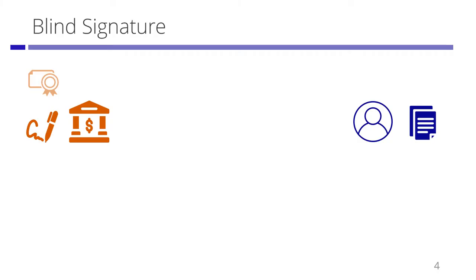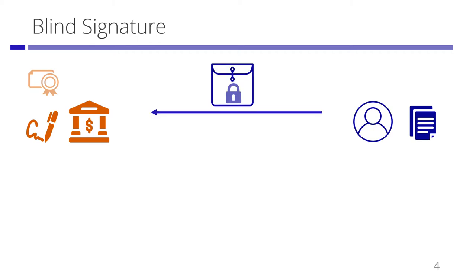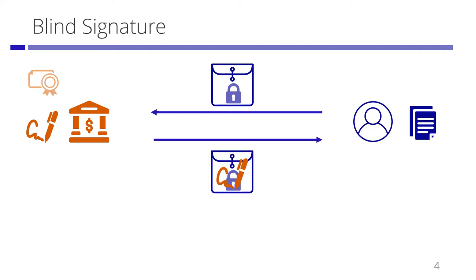First, I review what a blind signature is. Blind signatures are the digital analog of sealed envelopes with carbon copy sheets. There are a signer and a user. The signer has a public verification key and a secret signing key; the user has a message. The user puts the message into a sealed envelope with a carbon copy sheet and sends it to the signer. The signer signs on the sealed envelope without opening it and returns it to the user — that is, the signer does not see the message M.